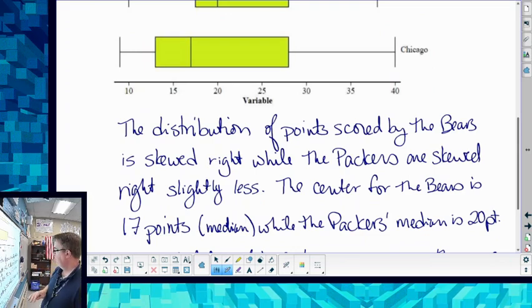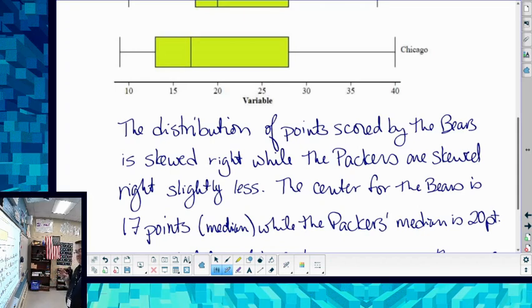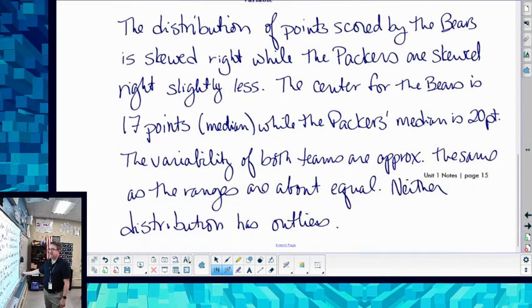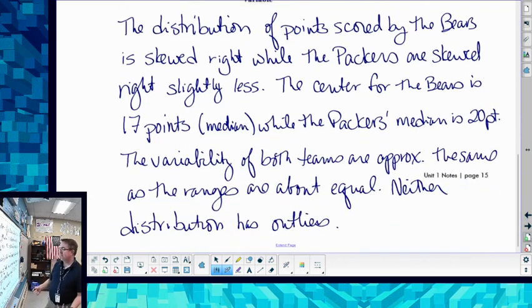So the Bears, the distribution of points scored by the Bears is skewed right, while the Packers are skewed right slightly less. The center for the Bears is at 17 points (median), while the Packers' median is 20 points. The variability of both teams are approximately the same as the ranges are about equal.